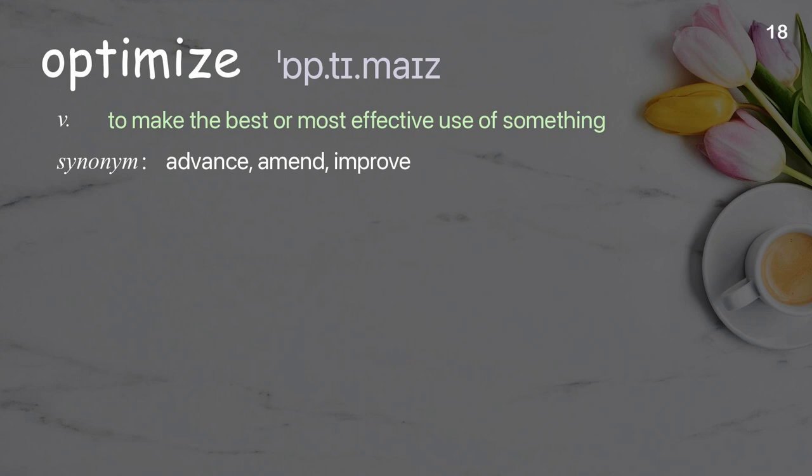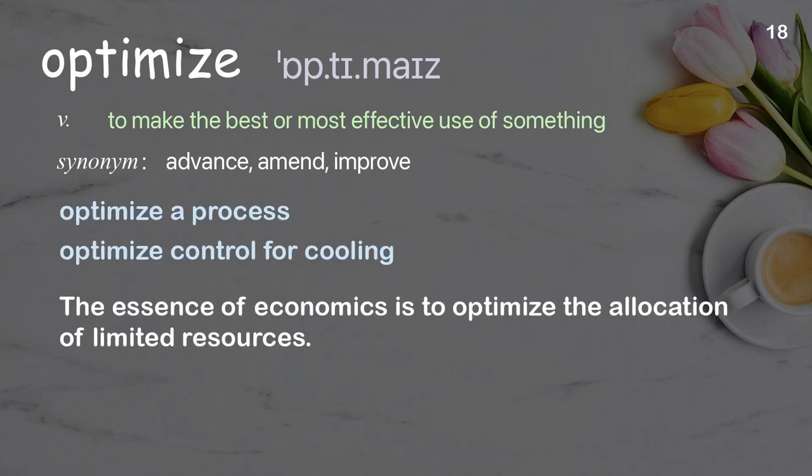Optimize. To make the best or most effective use of something. Examples: optimize control for cooling. The essence of economics is to optimize the allocation of limited resources.